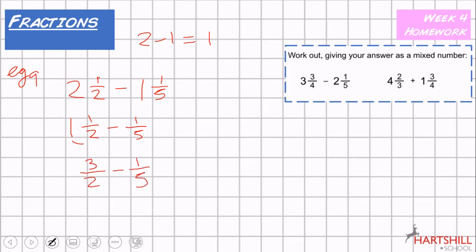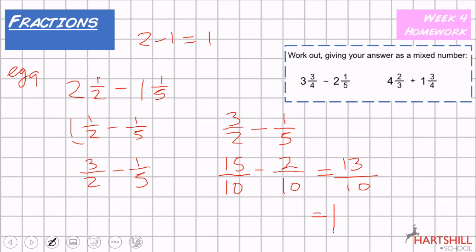We now have three over two take away one over five. We need to make the denominators the same — the lowest common multiple is 10. Two times five gives 10, so we times the numerator by five. Five times two gives 10, so we times that numerator by two. That gives 15 over 10 take away two over 10, which gives 13 over 10. To convert to a mixed number: ten goes into 13 once, with remainder three, so the answer is one and three-tenths.